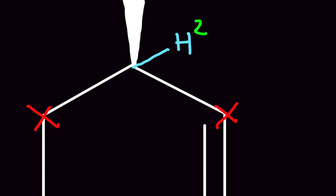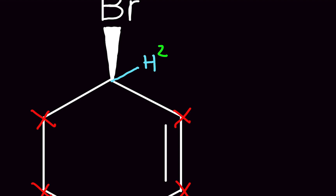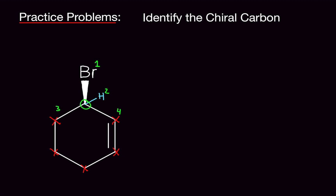For the remaining carbon, we use what I call the train method — draw an invisible train that travels down the bonds in each direction. Going one way, the train hits a carbon with a double bond; going the other way, it hits a carbon without a double bond — they're immediately different. So we have a bromine, a hydrogen, and two different chain groups — four different groups total — confirming this carbon is indeed chiral.